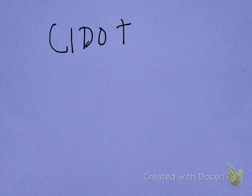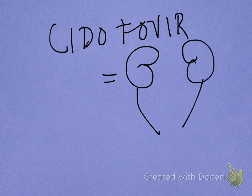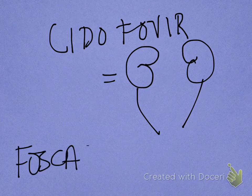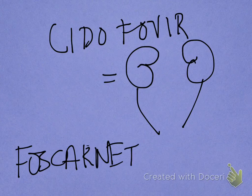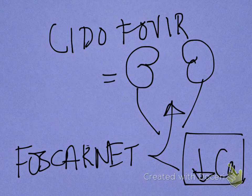Other options for CMV retinitis could also be Cidofovir, but the problem with Cidofovir is that it is nephrotoxic — toxic to your kidneys. Another option is Foscarnet, which is also very toxic to the kidneys. Not just that, it will also cause hypocalcemia. This is very important, because the patient will start to have manifestations of hypocalcemia along with CMV retinitis symptoms, which just makes their life even more miserable.